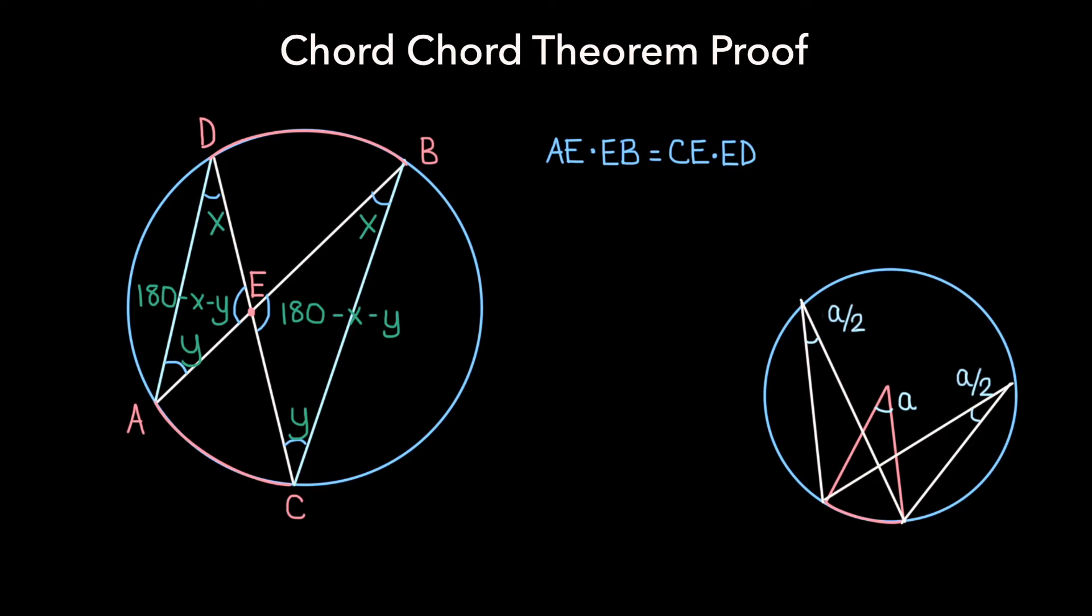Now we've shown that these two triangles are similar triangles, because they both share the angles X, Y, and 180 minus X minus Y.